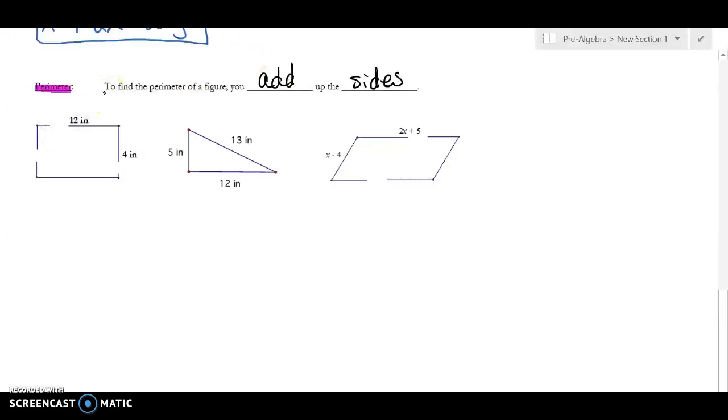On this rectangle, if the top is 12, then I know the bottom's 12. And if the right is 4, I know the left is 4. And then all I do is I add them all up. 12 plus 12 plus 4 plus 4. Well, that gives me 32.